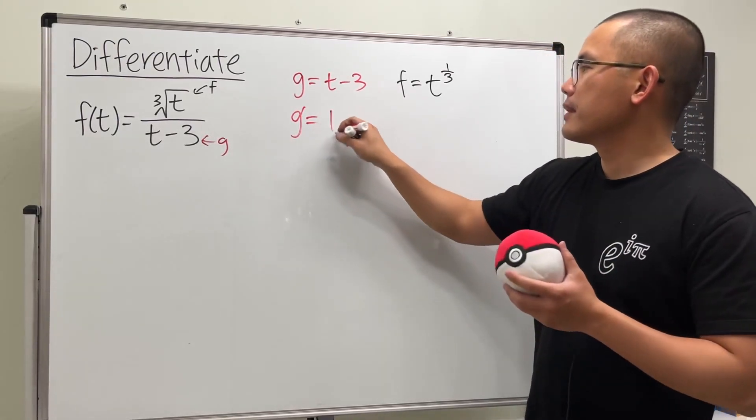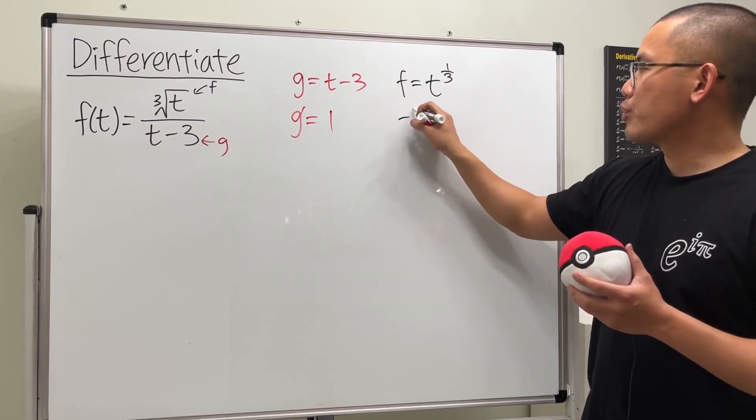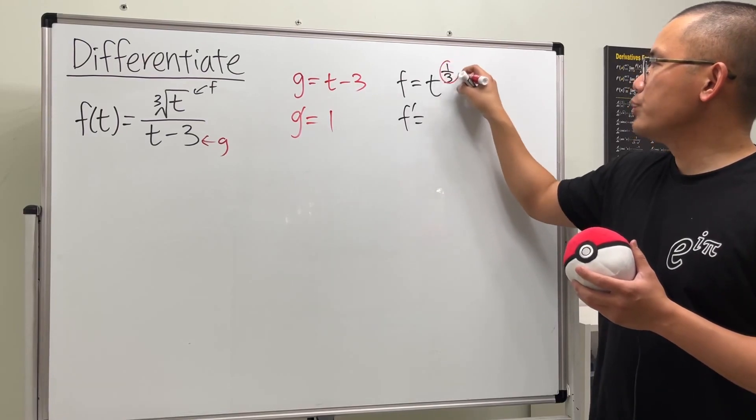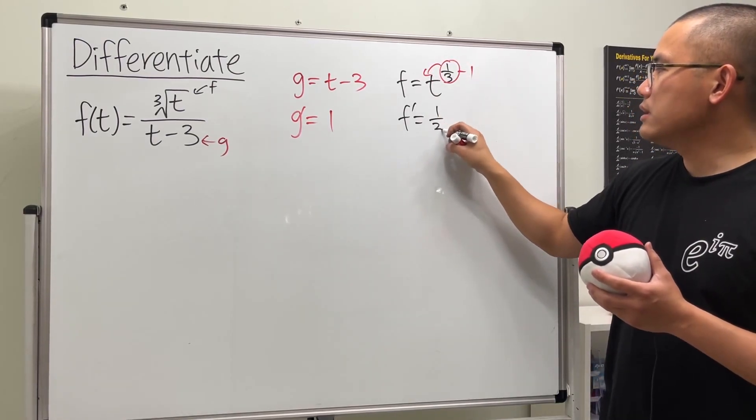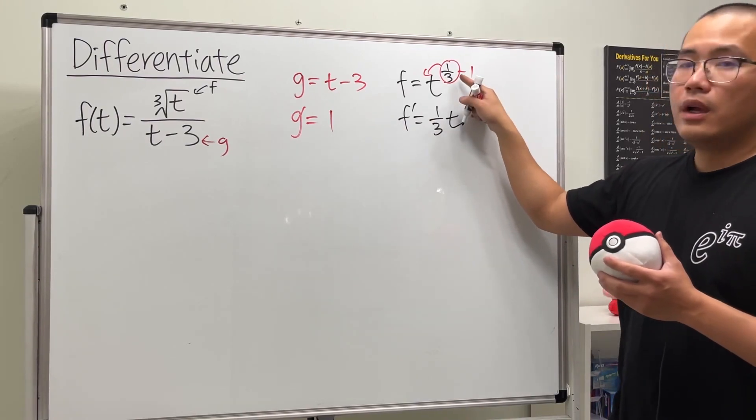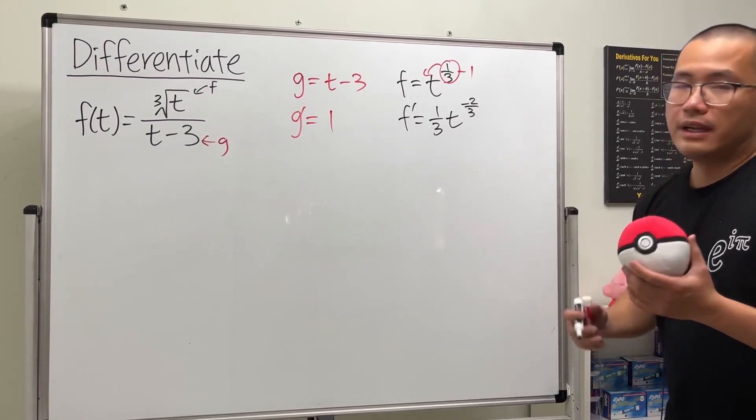g prime, the derivative of t is 1, and the derivative of negative 3 is 0, so that's all we need. Now for f prime, we first bring the power to the front and then minus 1, so we get one-third, and then we have t to the one-third minus 1, which is negative two-thirds.